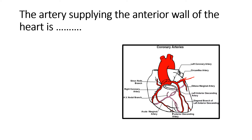To summarize: the two arteries arising from the aorta are the left and right coronary arteries. The right coronary artery divides into the acute marginal artery and the posterior descending artery. The left main coronary artery divides into the LAD, which supplies the anterior portion of both ventricles, and the left circumflex artery, which supplies the lateral or left part of the heart.